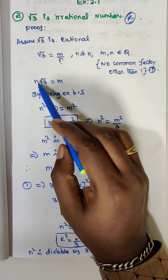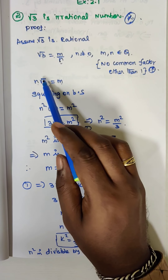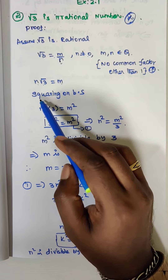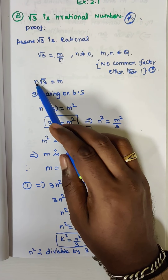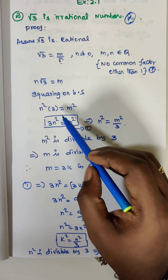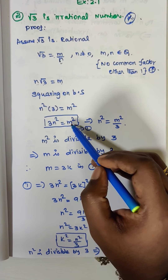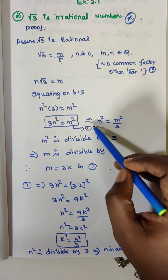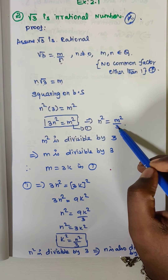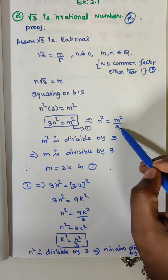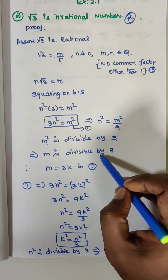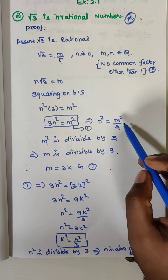We neglect the square root and take squaring on both sides: n squared times 3 equals m squared. So 3n squared is equal to m squared. Therefore n squared is equal to m squared divided by 3, which means m is also divisible by 3.